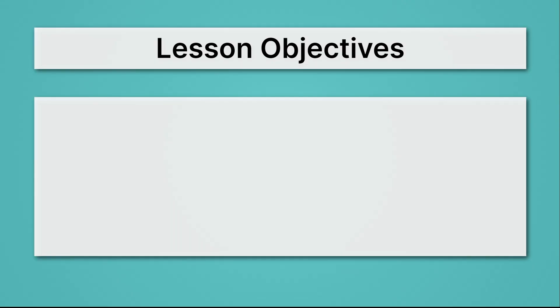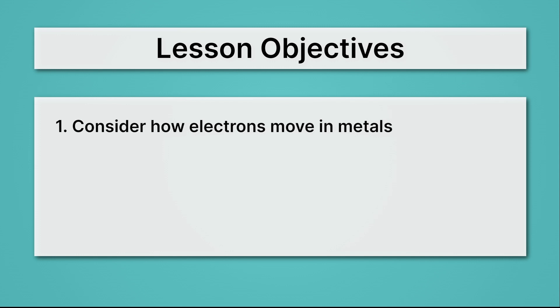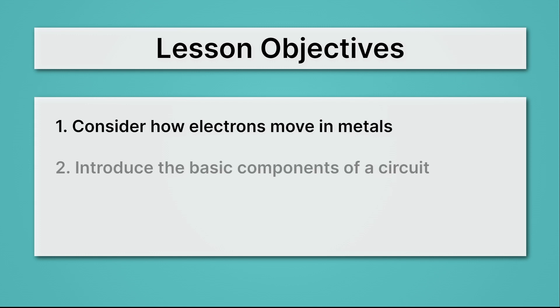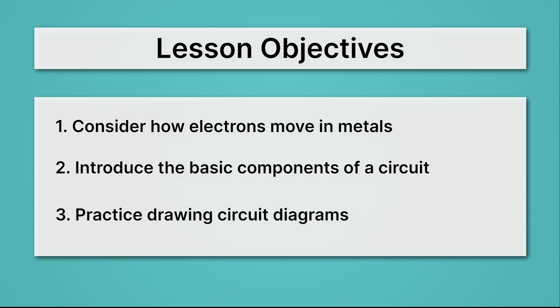Let's begin by reviewing our lesson objectives. First, we'll consider how electrons move in metals. Then we'll introduce the basic components of a circuit. And lastly, we'll practice drawing circuit diagrams.